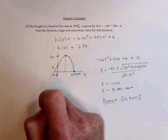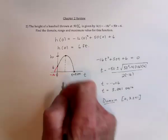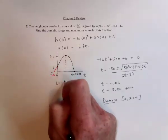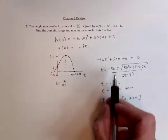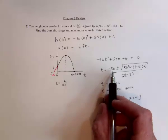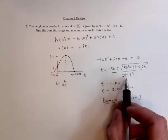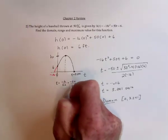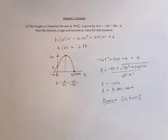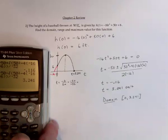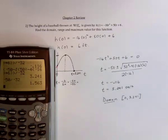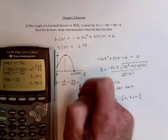Another way to do that is use this shortcut formula t equals negative b over 2a, which is actually this part of the quadratic formula, negative b over 2a. So negative 50 over negative 32. So negative 50 divided by negative 32, 1.563.